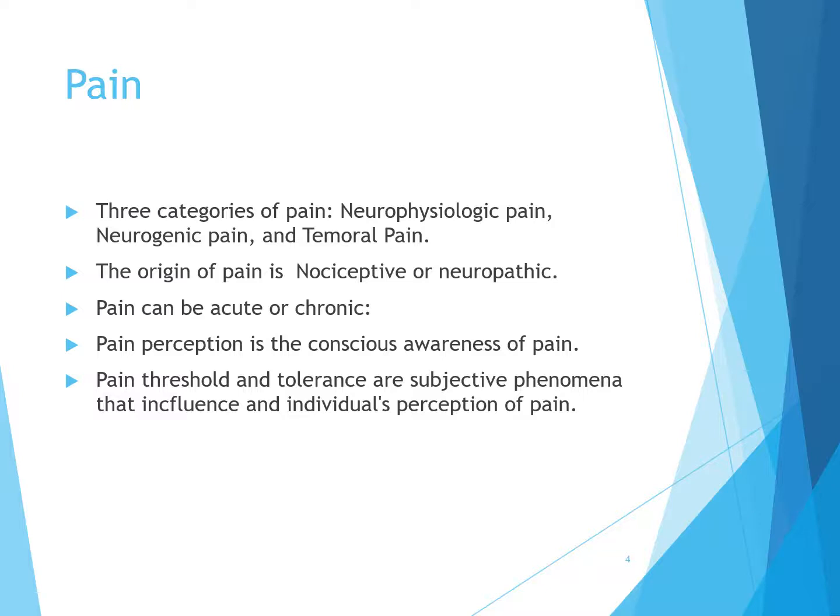Somatic pain can be sharp, dull, aching, throbbing, and poorly localized. Visceral pain is pain in the internal organs and the lining of the body cavities — it is poorly localized with an aching, gnawing, throbbing, or intermittent cramping quality. Referred pain is visceral pain that often radiates and spreads away from the actual site of the pain.